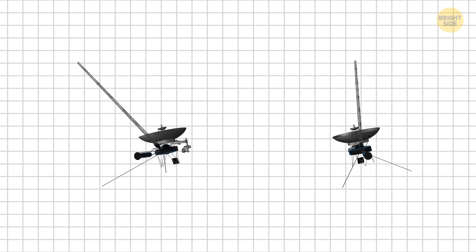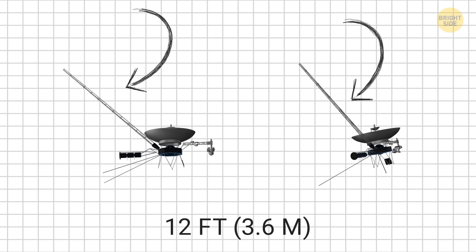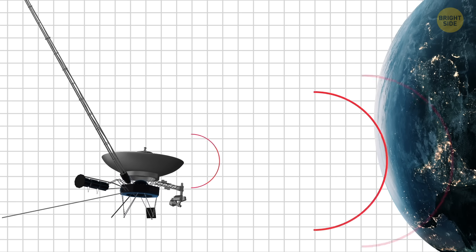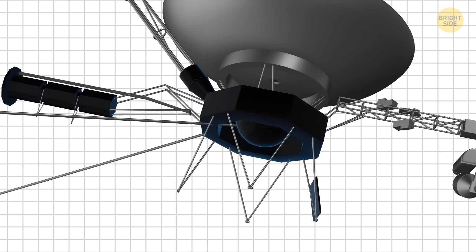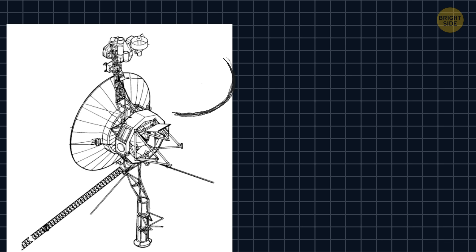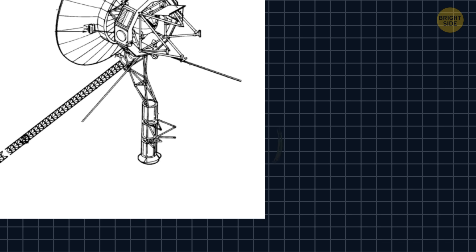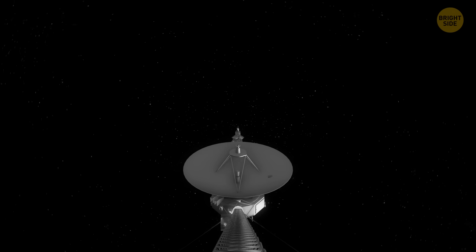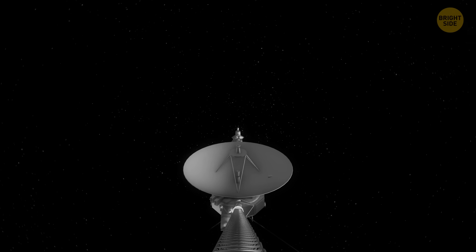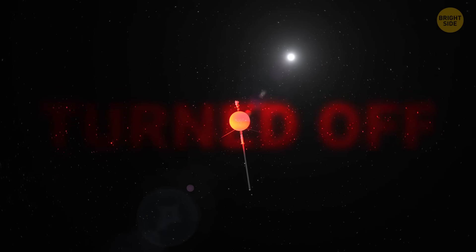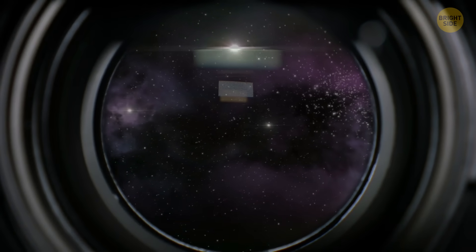The two Voyager spacecraft are nearly identical. Each has a large radio dish that is 12 feet across. This dish sends data back to Earth. They also have 16 thrusters to control their direction and make sure the dishes always point toward our planet. The thrusters use special hydrazine fuel, and the spacecraft's electronics are powered by thermoelectric generators that run on plutonium. Each Voyager carries 11 scientific instruments. About half of them were made specifically to study planets, and most of those are now turned off. The turned off instruments include several cameras, spectrometers, and two radio-based experiments.